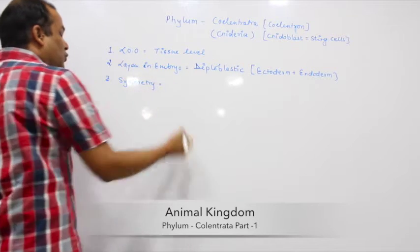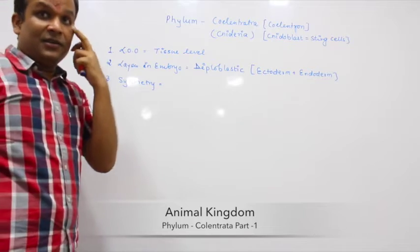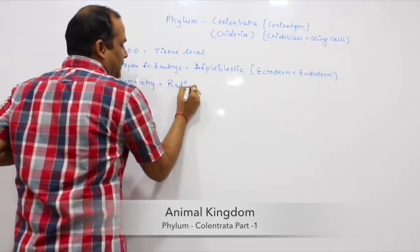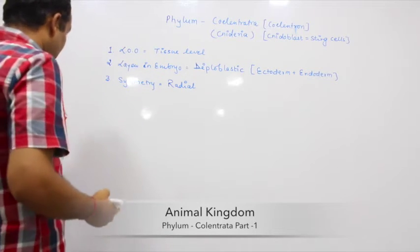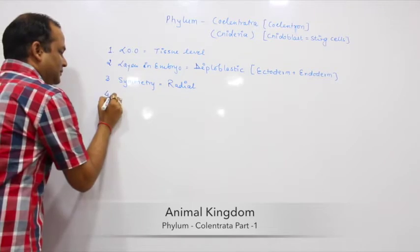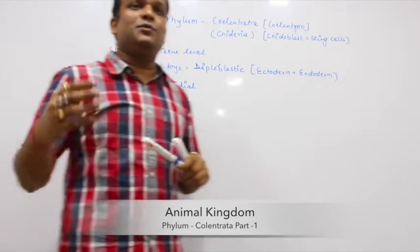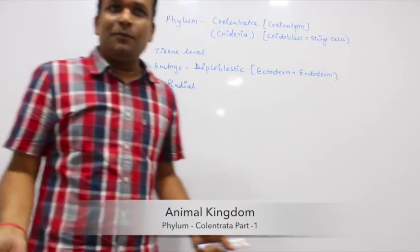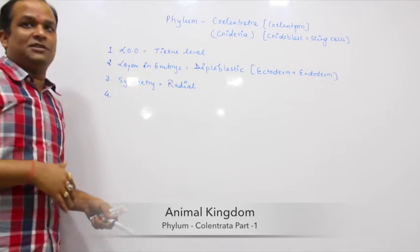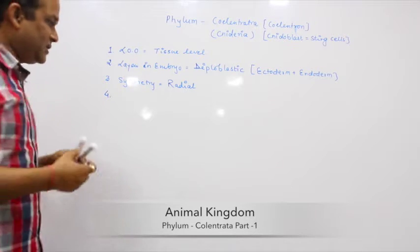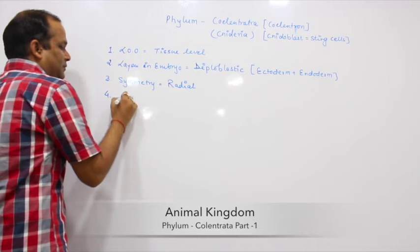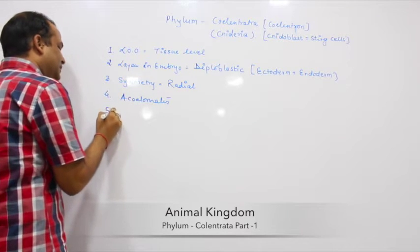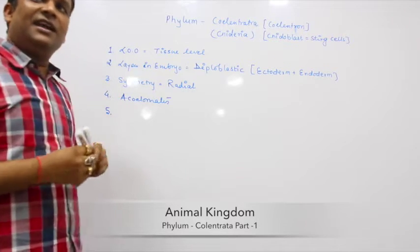Third one is symmetry. They belong to group Radiata and radial symmetry is present. After radial symmetry, the next one is coelom. Because they are diploblastic, coelom is not present, so they are acoelomate.